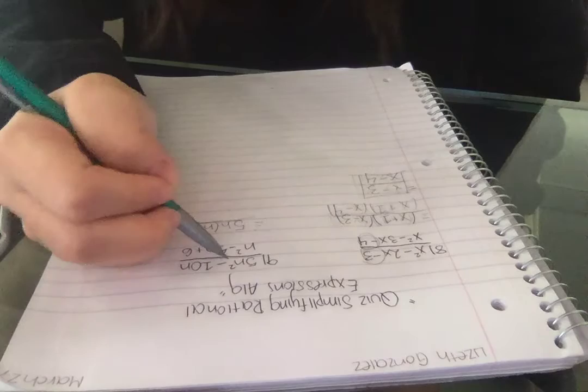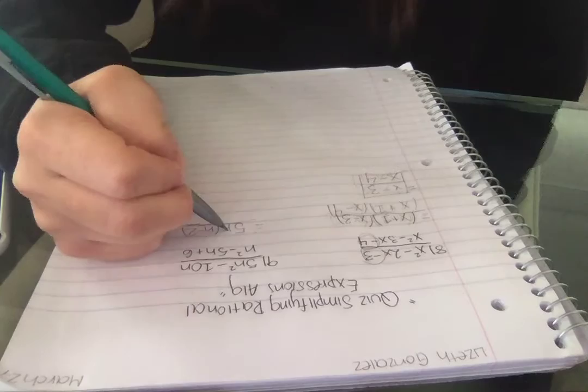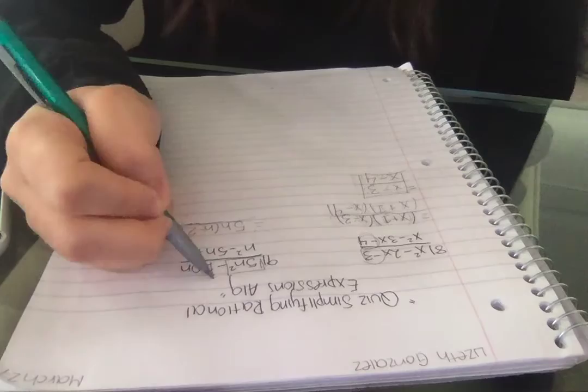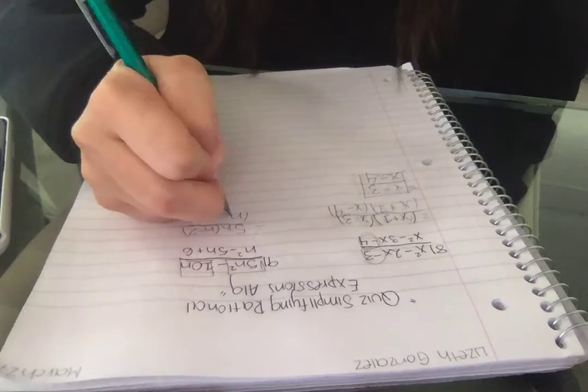I did this because I'm factoring it. 5n times n makes this, and 5n times negative 2 makes this. And down here I put...